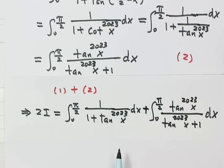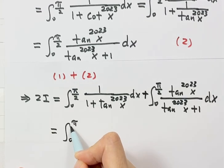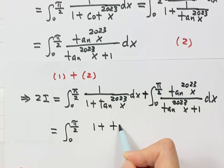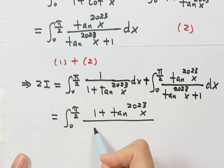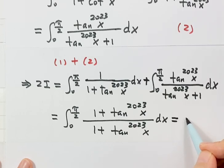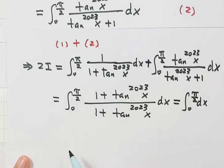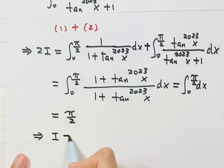Combining the numerators, we get (1 + tan^2023(x))/(1 + tan^2023(x)), which equals 1. So the integral simplifies to just dx from zero to π/2, which equals π/2. Therefore 2i = π/2, and i = π/4. That is the answer for the second integral.